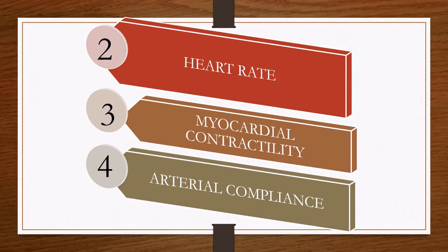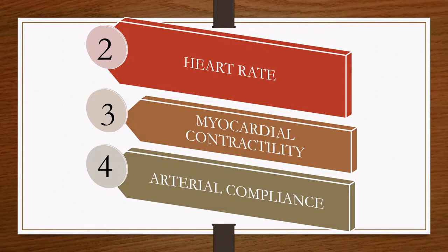Heart rate is the number of heartbeats per minute. What if heart rate is high or low — will it lead to high or low blood pressure? Myocardial contractility is the ability of the myocardium to contract, or the ability of heart muscles to contract. What if contractility is high or low? Arterial compliancy is how easily arteries allow blood to pass through.